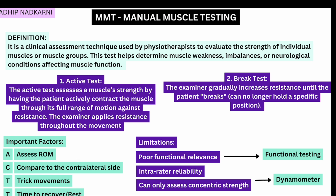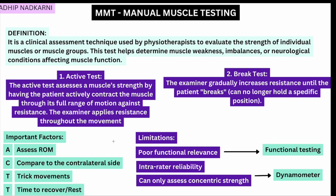Comparing the contralateral side is important because if you are stronger than the patient and haven't checked the opposite side, you might grade them 4 instead of 5 due to subjectivity. Trick movements are compensatory movements carried out by the body when the muscle cannot produce the required force — you can be tricked into thinking the target muscle is producing movement when other muscles are compensating.